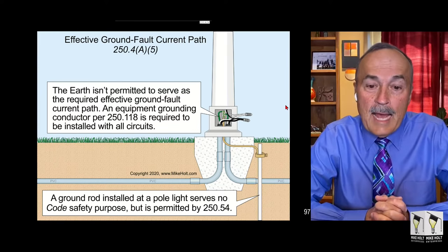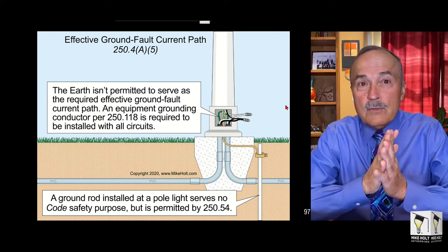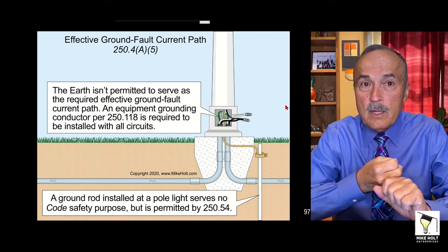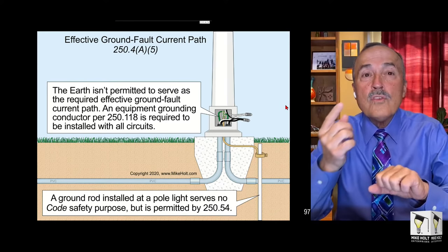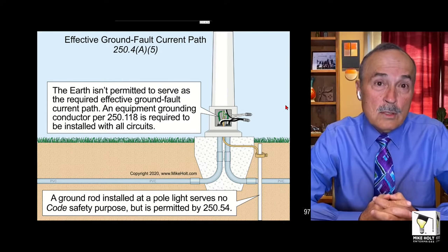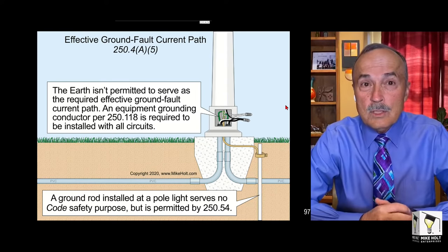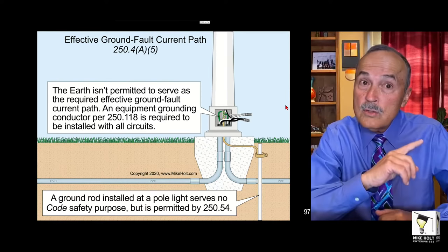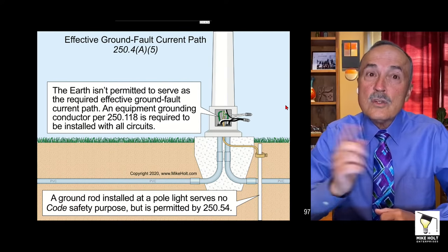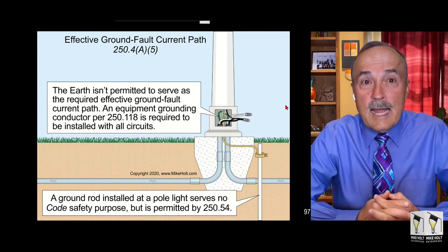Effective Ground Fault Current Path - that's a term defined in Article 100 as well. The effective ground fault current path is an intentional path created to provide a low impedance path from the point of a ground fault back to the source. It's for the purpose of clearing a fault. When you have a ground fault, that fault current is returning to the power supply - the transformer, either utility transformer or a secondary transformer. If you have a low impedance path from the point of the ground fault to the source...